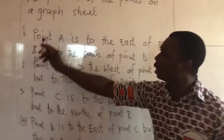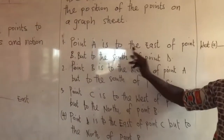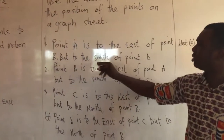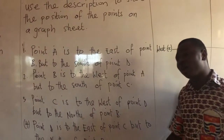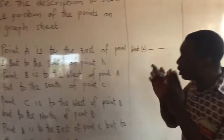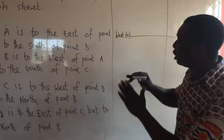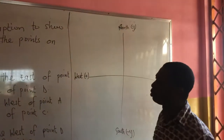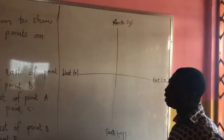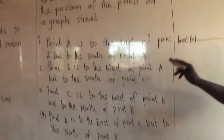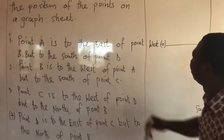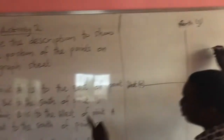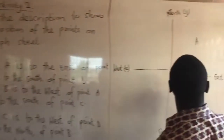The description given to us: number one, point A is to the east of point B, and to the south of point D. We are going to use this description to draw the points on the cardinal point or the graph sheet. So, this is the cardinal point. They are saying that point A is to the east of point B. So, this is my east — I will just indicate my A here.